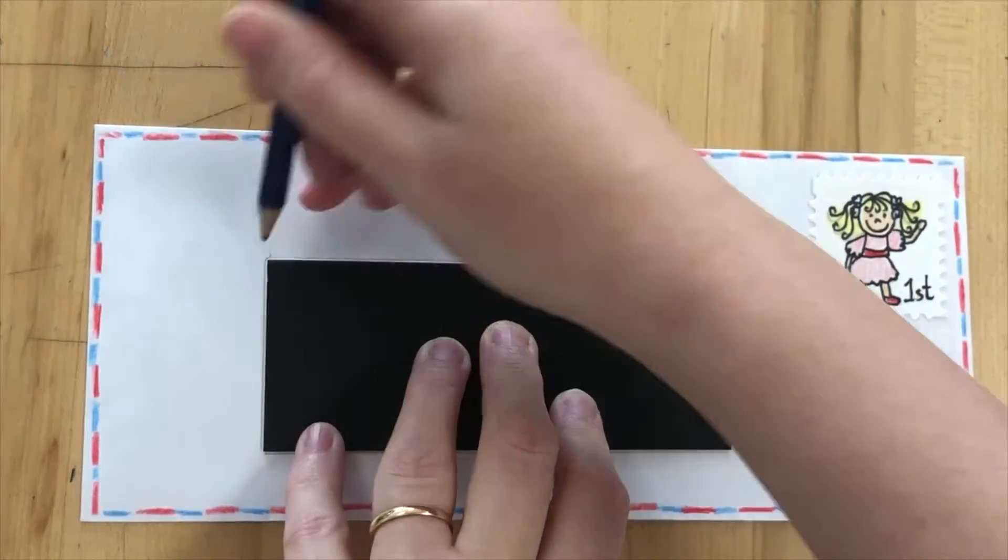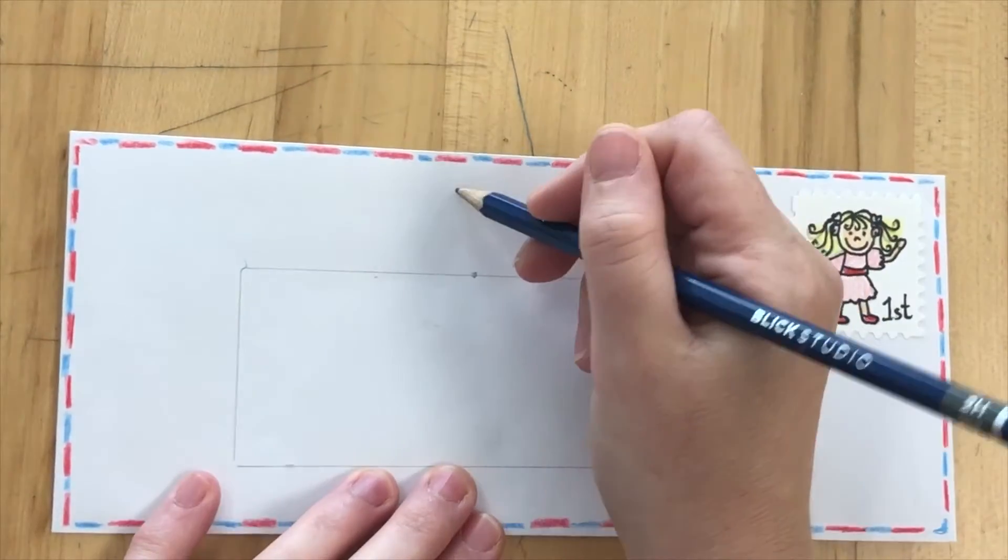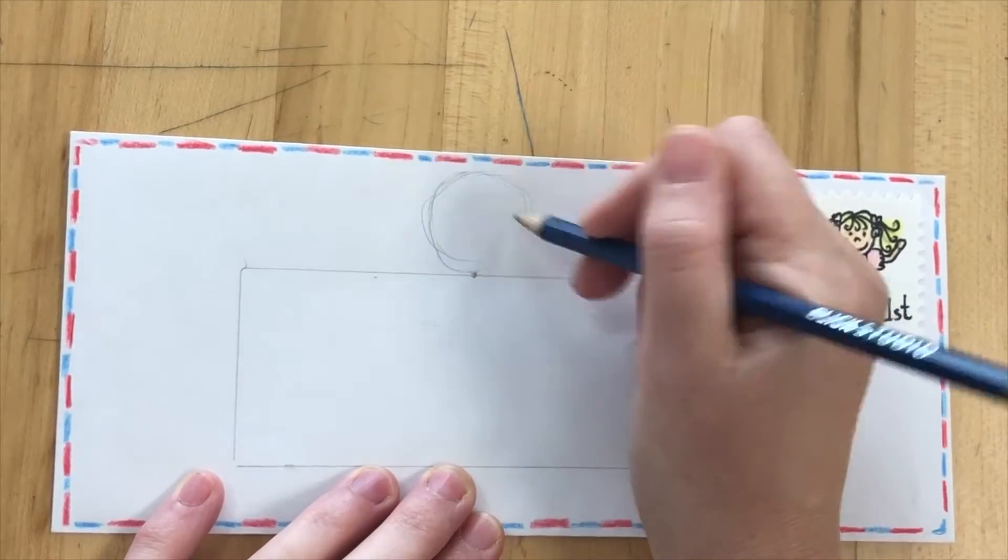It needs to be big enough to fit your writing of an address in there. Then you're going to find the little middle point of this rectangle and above there you're going to put the teddy bear's head.